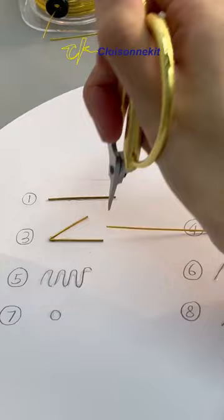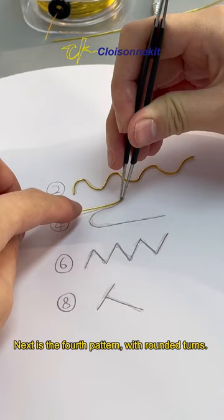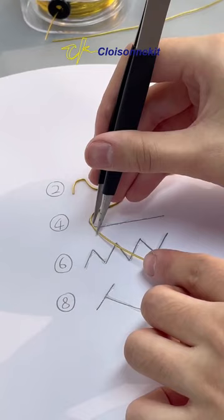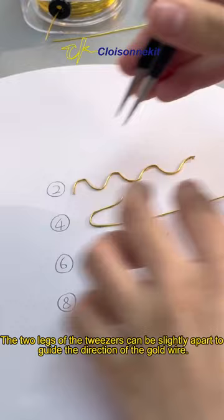Next is the fourth pattern with rounded turns. Hold the gold wire with tweezers and swing it with the other hand. The two legs of the tweezers can be slightly apart to guide the direction of the gold wire.